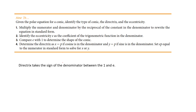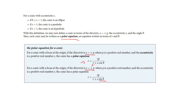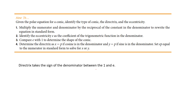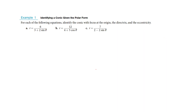One thing I noticed working through the problems: the directrix takes on the sign of the denominator. We could have a plus or minus in the denominator. If it's positive, then our directrix equation is going to be a positive p. If it's a minus, then our directrix equation is going to have a negative p. We're just going to take them at their word and work the problems.